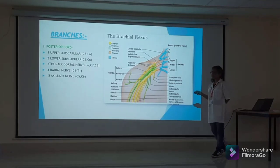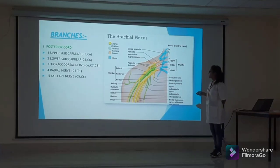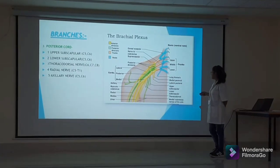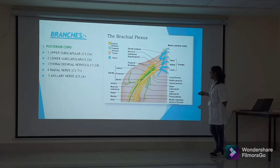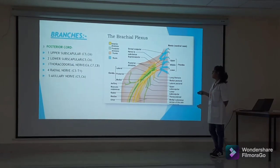The posterior cord has five branches: upper subscapular, lower subscapular, thoracodorsal, axillary, and radial nerve.